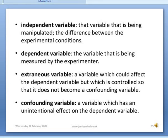Now here you can see on screen: independent variable, dependent variable, extraneous variable, and confounding variable. The independent variable is the variable that is being manipulated, altered, or its strength varied by the researcher in the experiment. It is the effect of this change in the variable which the researcher wants to observe and note in the study.